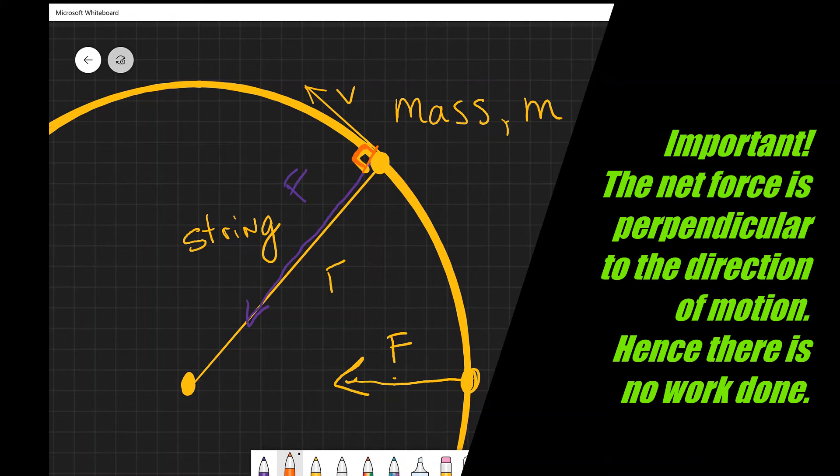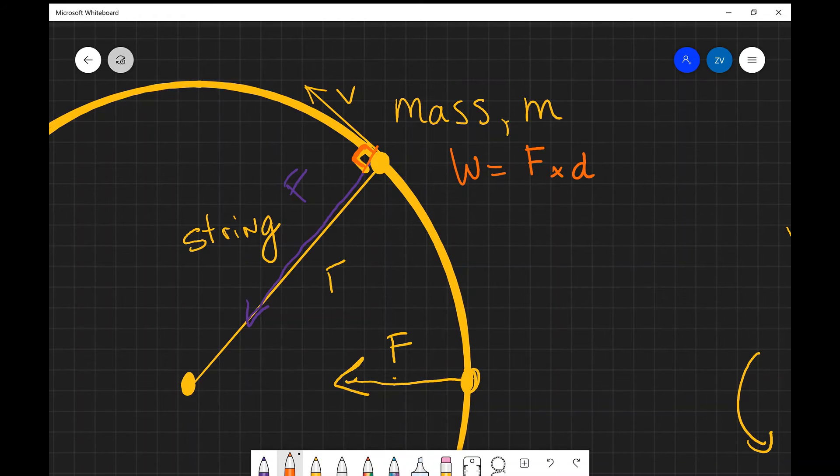Now this means that there is no work done. There's no work done because work done is equal to force multiplied by the displacement and there's the cosine of the angle between them. Now if this angle is 90 degrees, cosine of 90 is equal to zero. So there's no work done. So in this case, this will be equal to F times the displacement in that direction times the cosine of 90 degrees, which is equal to zero. But once again, just to summarize, the force and the direction of motion are perpendicular, which means that there is no work done.